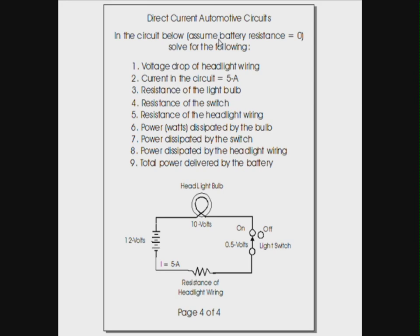As we state up here, in the circuit below, assume battery resistance equals 0. Solve for the following items. So we're going to pretend this is a magical battery. It has no internal resistance. And later we're going to delve into what the resistance inside a battery actually does. For right now, it's your first exposure to a series circuit. We want to keep it simple. So go ahead and solve all these values using Ohm's law.